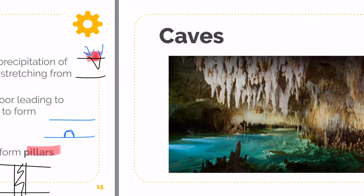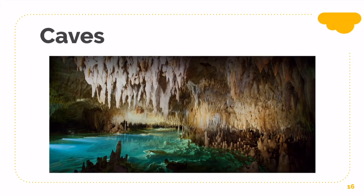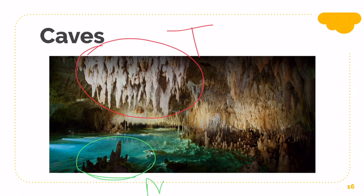Here is an example image, as just discussed. You can go ahead and point out the stalactites — those are the ones hanging from above. Whereas those at the bottom are your stalagmites. You notice there's a lot of water, so this could be a phreatic zone — most likely a phreatic zone.